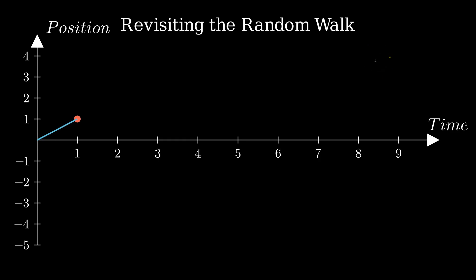Let's revisit the random walk. Imagine a drunkard stumbling - each step is a coin flip: heads right, tails left.